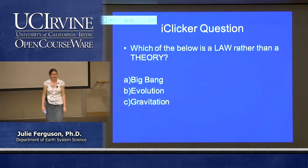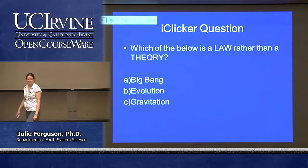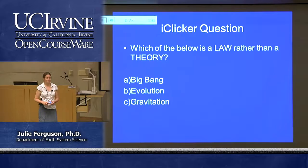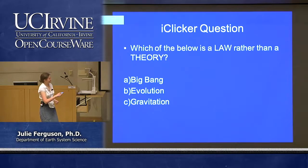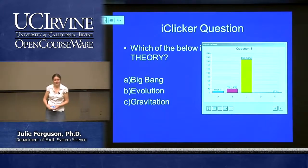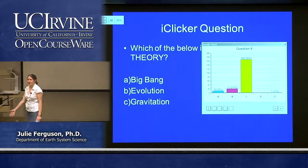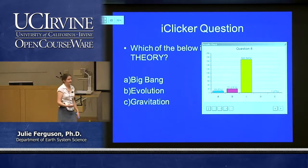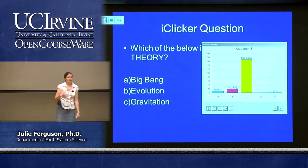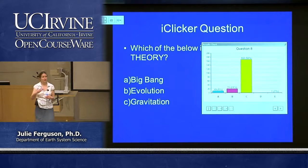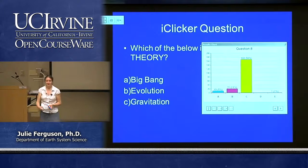Which of the following is a law rather than a theory? Gravity — absolutely. We have not found any exceptions to the fact that if I drop something heavy it will fall to the ground, so it really has become the law of gravitation. The Big Bang theory is still very much a theory, and evolution is still very much a theory — it's the best thing we have, and it's passed a number of tests, but for various reasons such as the time scales involved it's not rigorous enough to be called a law yet. It doesn't mean we don't think it's true; it's just very difficult to test to that level of certainty.